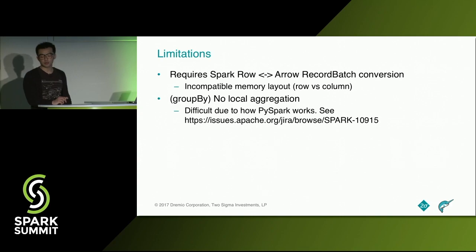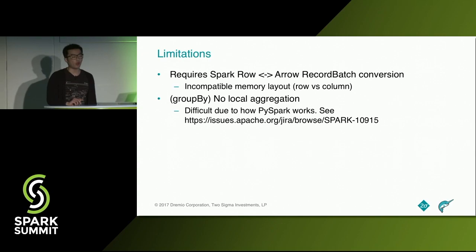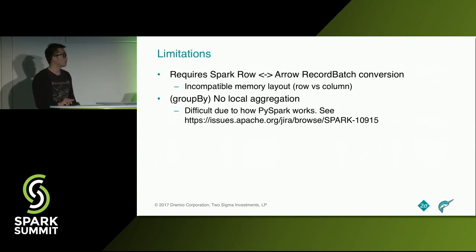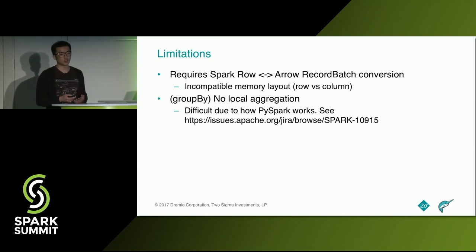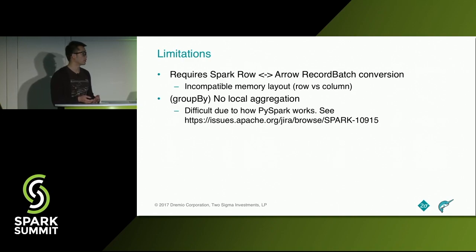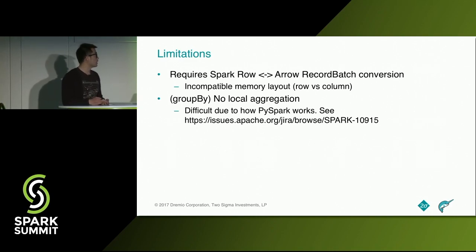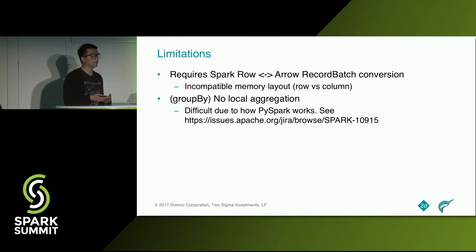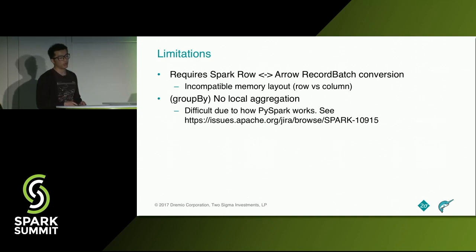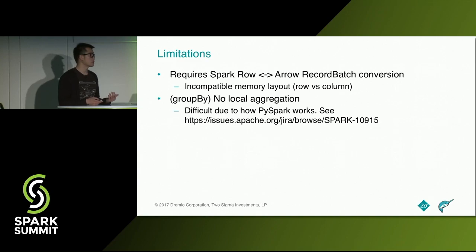There are some limitations we found along the way. First, this approach requires conversions between Spark rows and Arrow record batches. Spark is inherently row-based — an iterator of rows — while Arrow is inherently column-based, so we need extra CPU cycles to copy data from one format to the other. This can hopefully be improved once we have access to the column format within Spark internal. Second, in the group-by case, it's quite hard to do local aggregation because we have to shuffle the data first before applying the UDF function. There's a JIRA discussing aggregation functions in PySpark if you're interested in details.